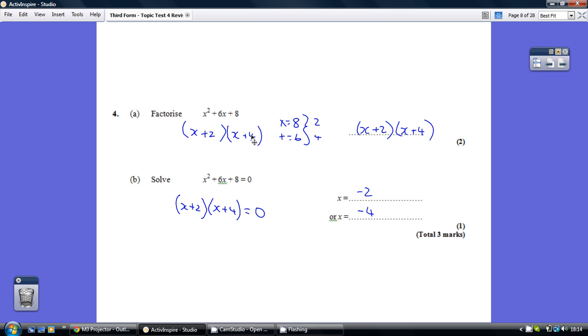We're trying to find two numbers that multiply to make the plus 8, but add to make the plus 6. So just going to write that on the side. Two numbers times for 8, add for 6, and that's 2 and 4, because two times 4 is 8, but 2 add 4 is 6. There are magic numbers: x plus 2, x plus 4.